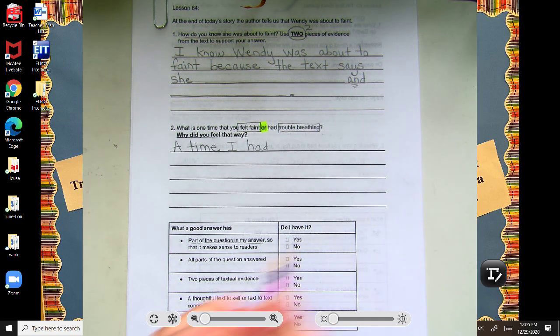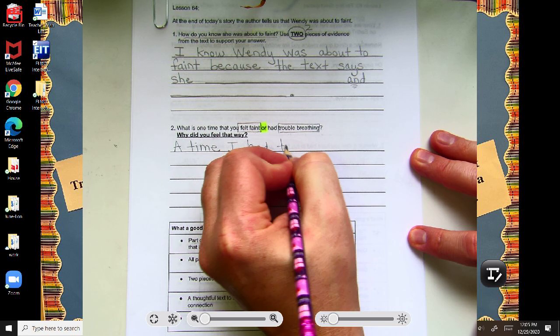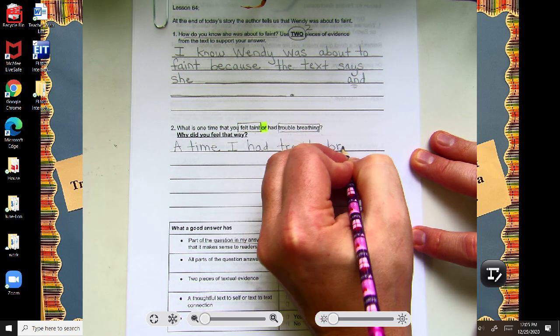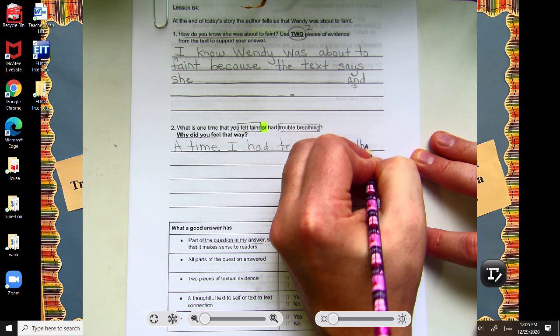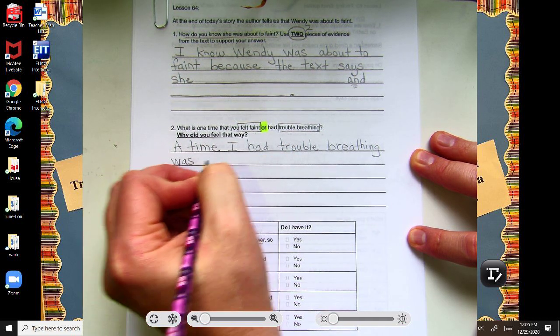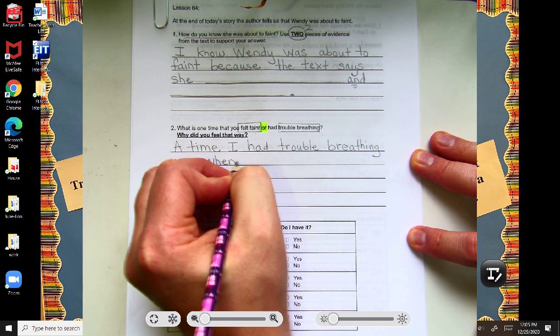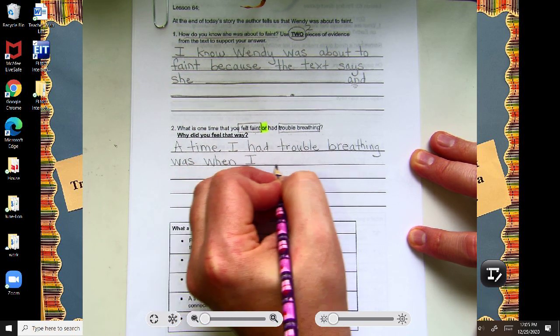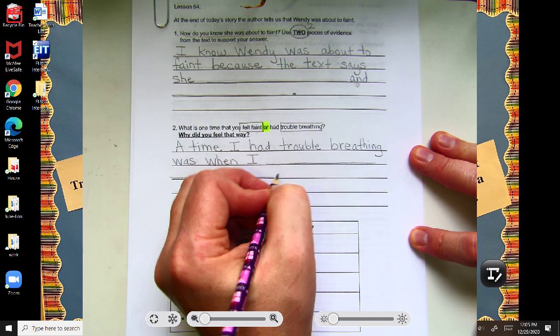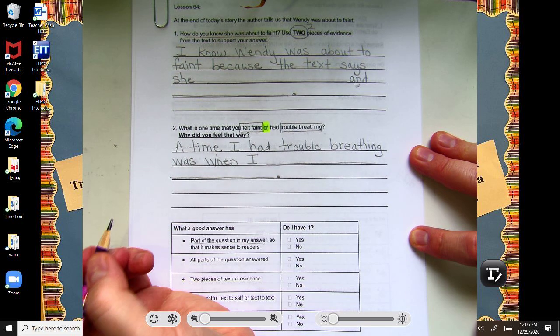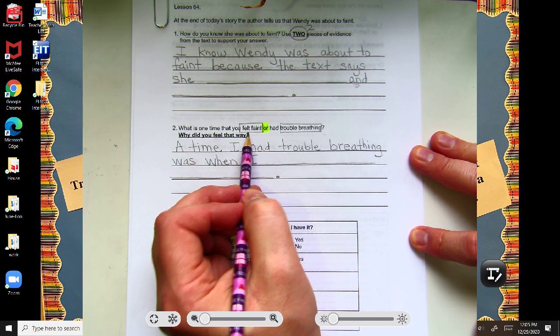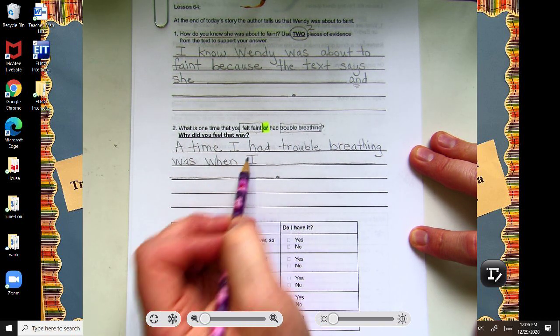So, a time I had trouble breathing was when I, right, and then you could finish that with the time you had trouble breathing, or a time I felt faint was when I, blah, blah, blah.